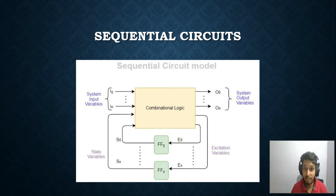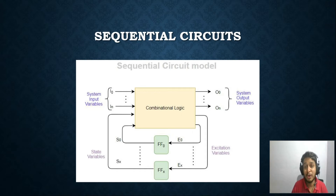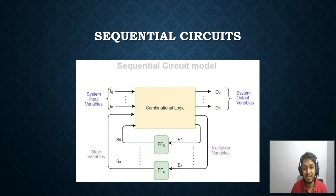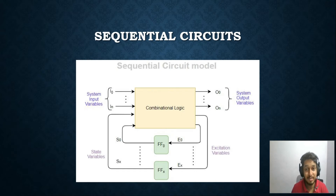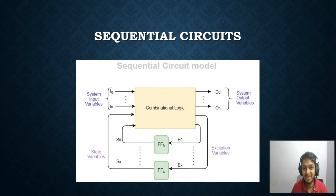Why do we call it a flip-flop? The name comes from its behavior — it is either flipped or flopped, meaning it is either in one state or another, either 0 or 1 in binary. It is also called a bistable multivibrator because it has two stable states. There is another state called the metastable state, which is neither 0 nor 1 — and we don't want that to happen.